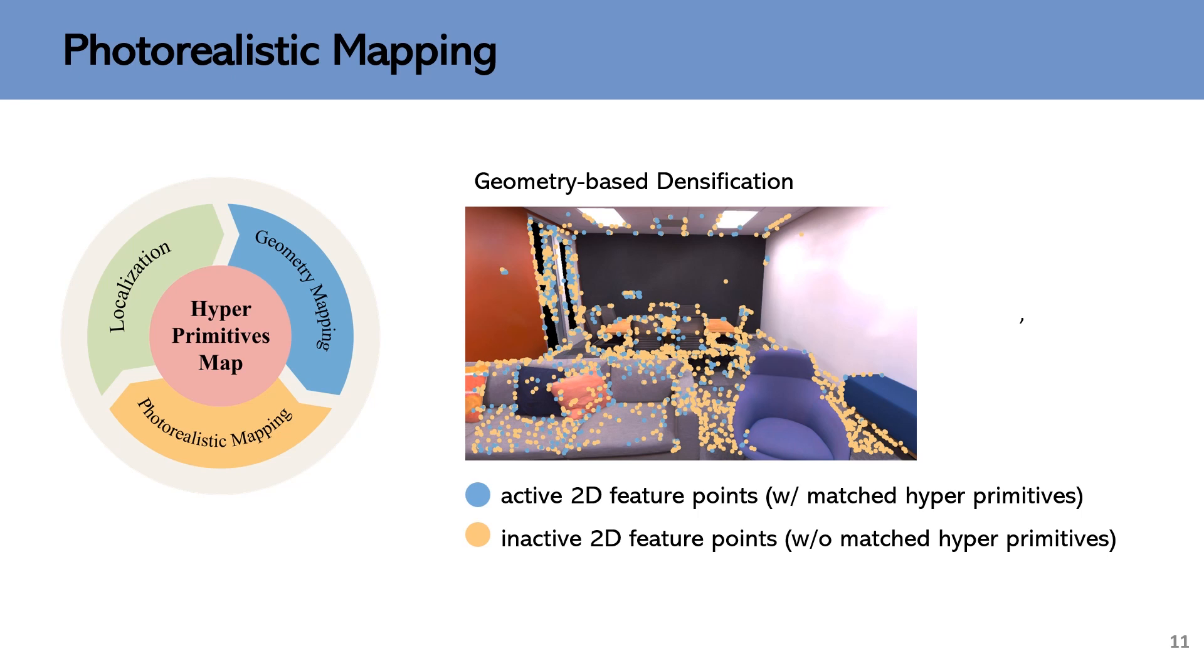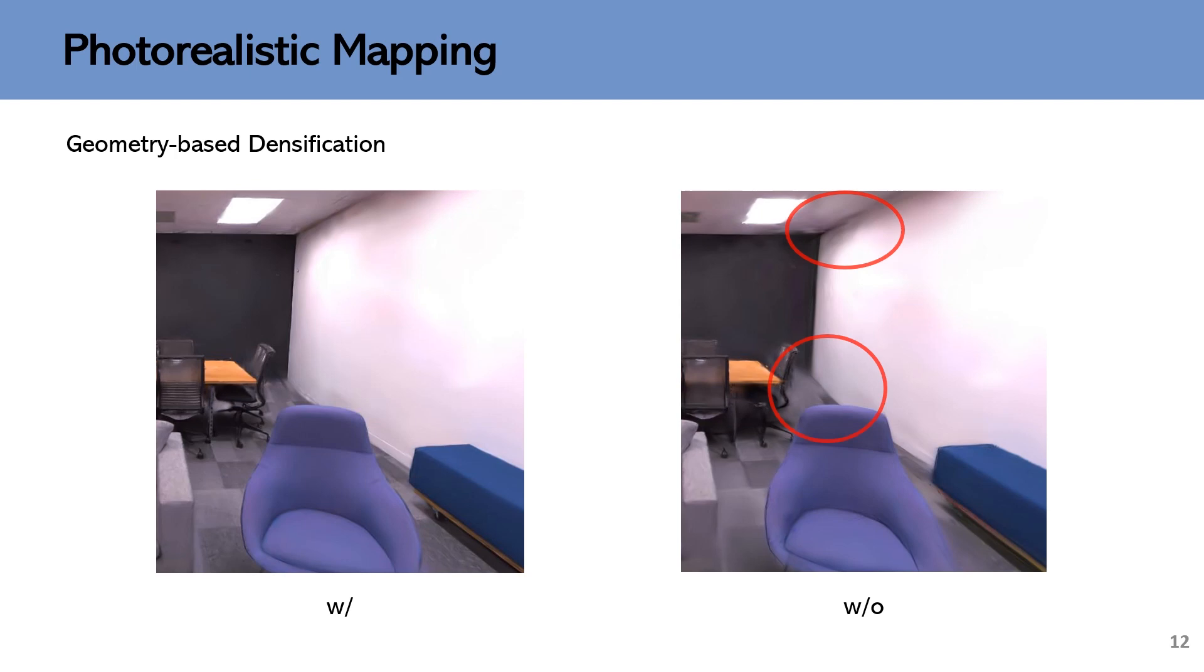Therefore, we actively create additional temporary hyper primitives based on the inactive 2D feature points once the keyframe is created for photorealistic mapping. This is a qualitative evaluation. The rendering image without geometry-based densification has serious and obvious artifacts.